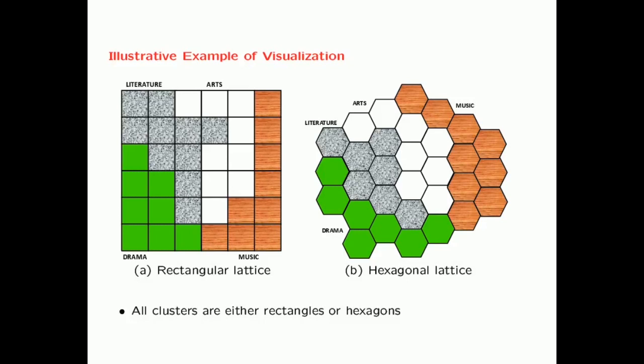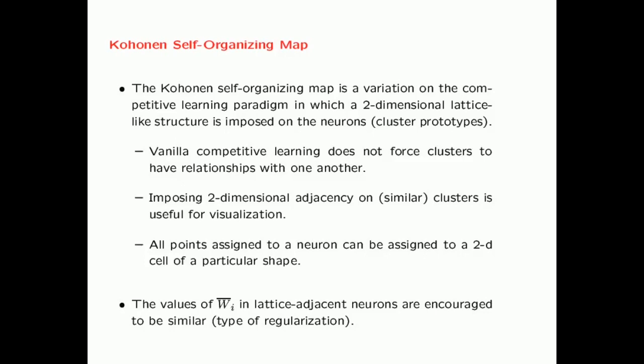Let's see how we can modify basic competitive learning in order to encourage this type of two-dimensional arrangement of clusters. The Kohonen Self-Organizing Map is a variation on the competitive learning paradigm in which a two-dimensional lattice-like structure is imposed on the neurons — those neurons are your cluster prototypes. Vanilla competitive learning does not force the clusters to have relationships with one another. However, in the Kohonen map, imposing a two-dimensional adjacency on similar clusters is very useful for visualization.